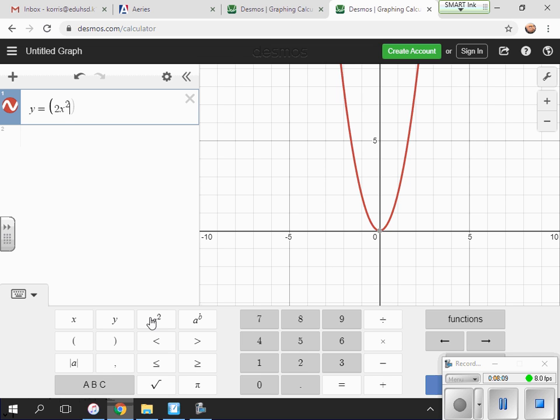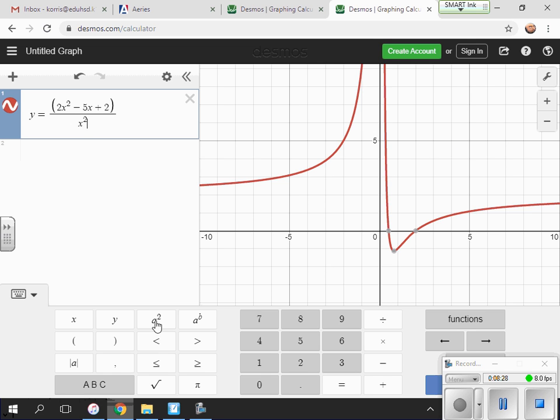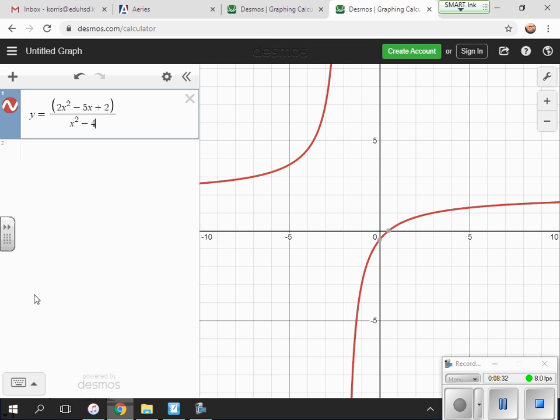2x² minus 5x plus 2 in parentheses divided by, and here's the nice thing about Desmos, it automatically puts everything up, and the next thing automatically goes down. x² minus 4. So that's what the graph looks like. And like I said, what don't you see? You don't see the hole. The hole was at 2 and 3 quarters. Right here, there's a hole. There's an open space right there. It doesn't show it, but there's an open space right there.